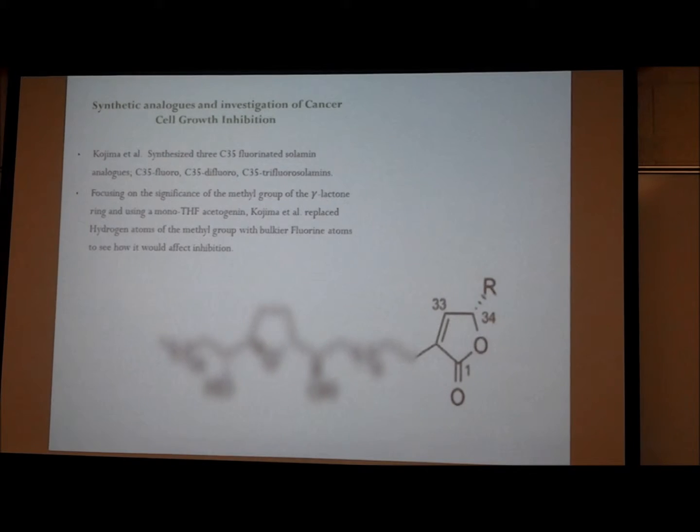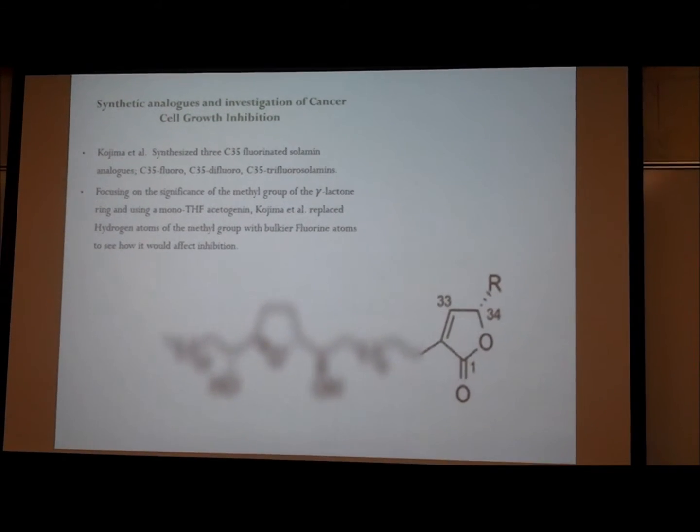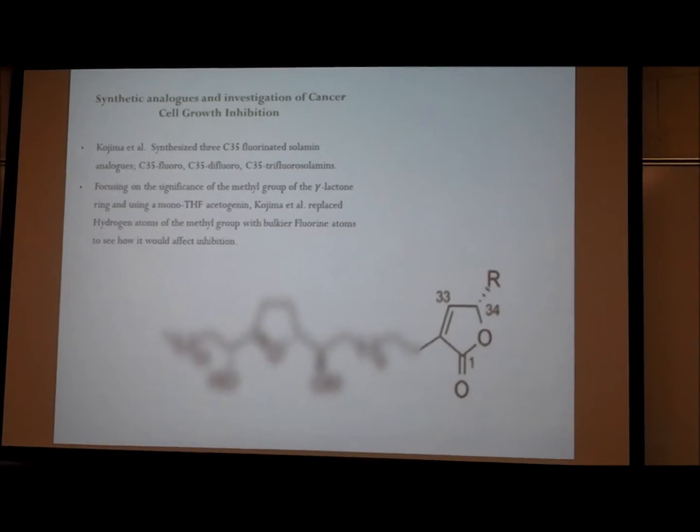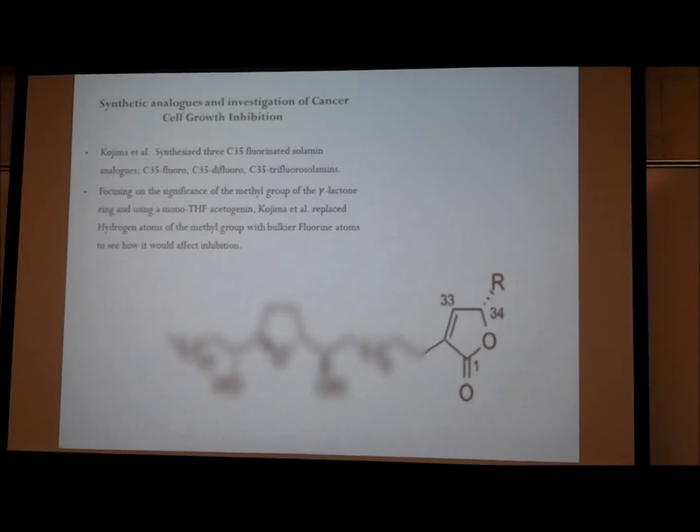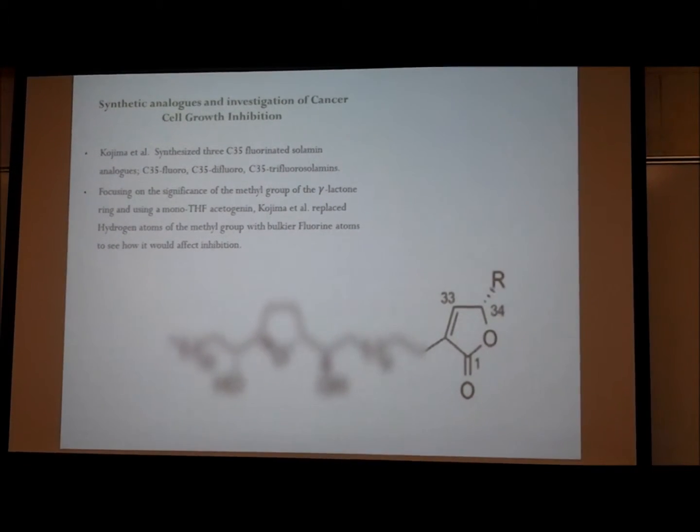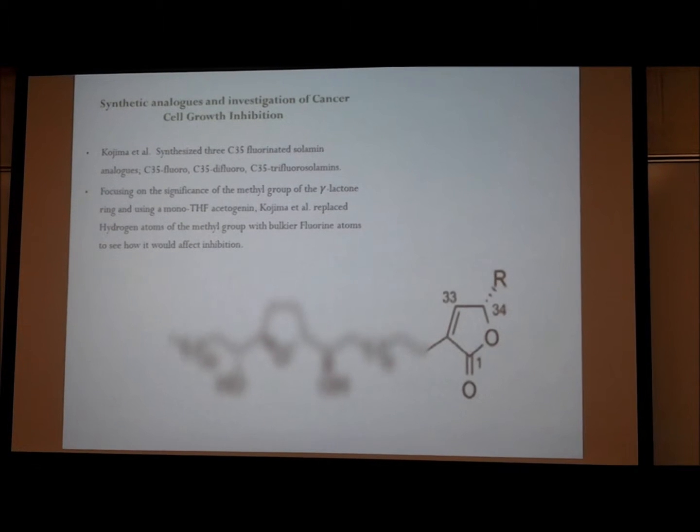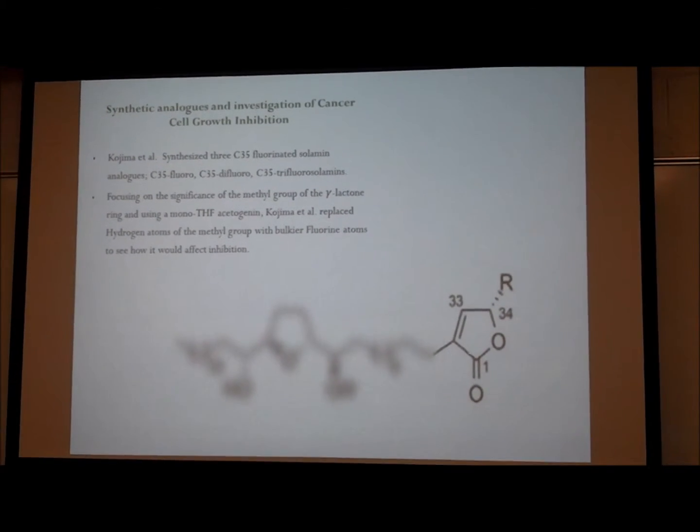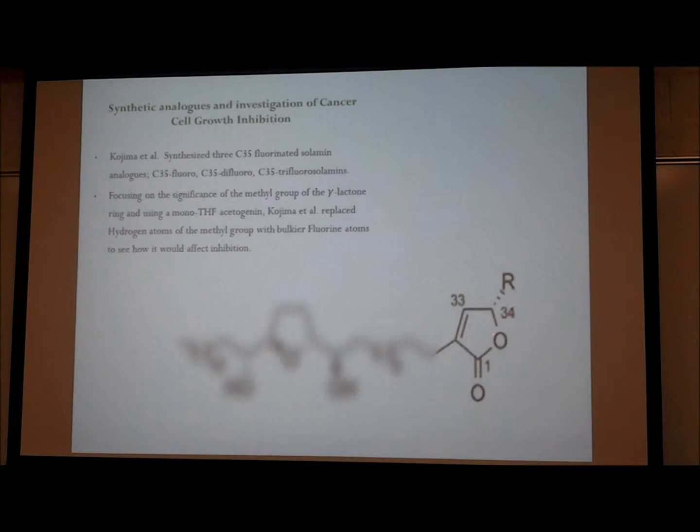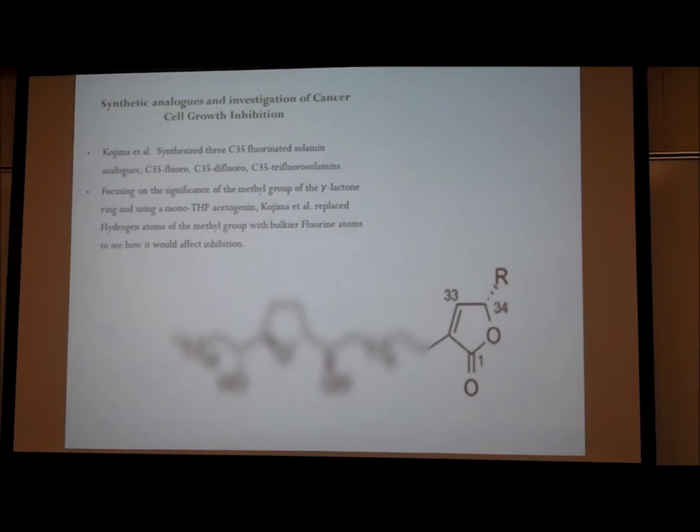Focusing on the significance of the methyl group of the gamma-lactone ring and using a mono-THF acetogenin, Kojima replaced the hydrogen atoms of the methyl group with bulkier fluorine atoms. This was to see if the complex would still recognize the gamma-lactone even if the methyl group was altered.